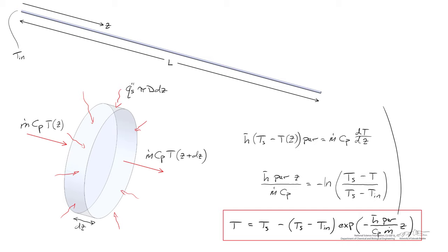Let's double check the units within the exponential. We know that they have to be dimensionless. The heat transfer coefficient has dimensions of watts per meter squared Kelvin. The perimeter has dimensions of length. Z has dimensions of length.